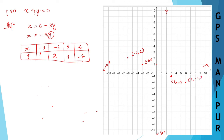Join all these points to draw the line. This is line AB, and this is the graph for x plus 3y equal to 0. I hope you understood — you can take any numbers and try. As long as your calculation is correct, you will get the right answer. Thanks so much, we will meet in the next video.